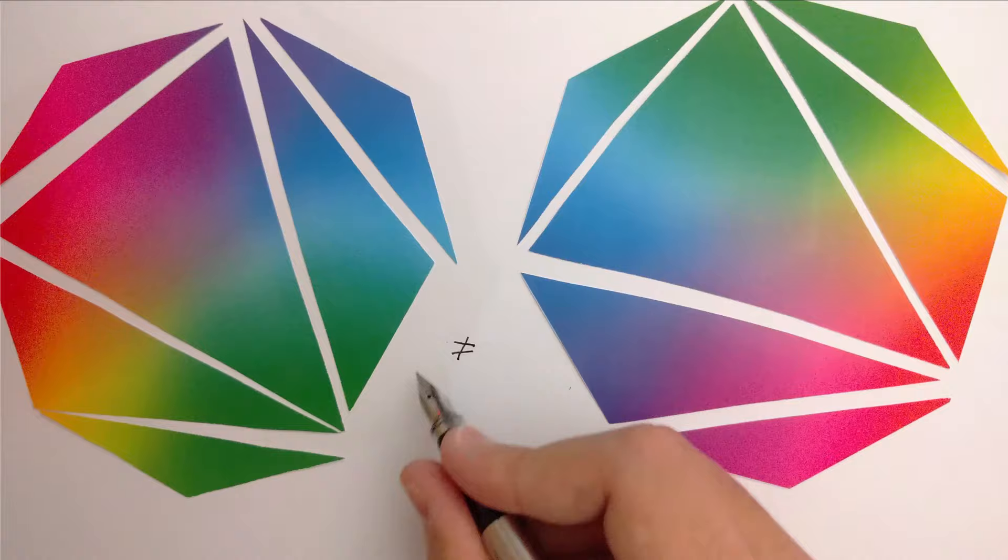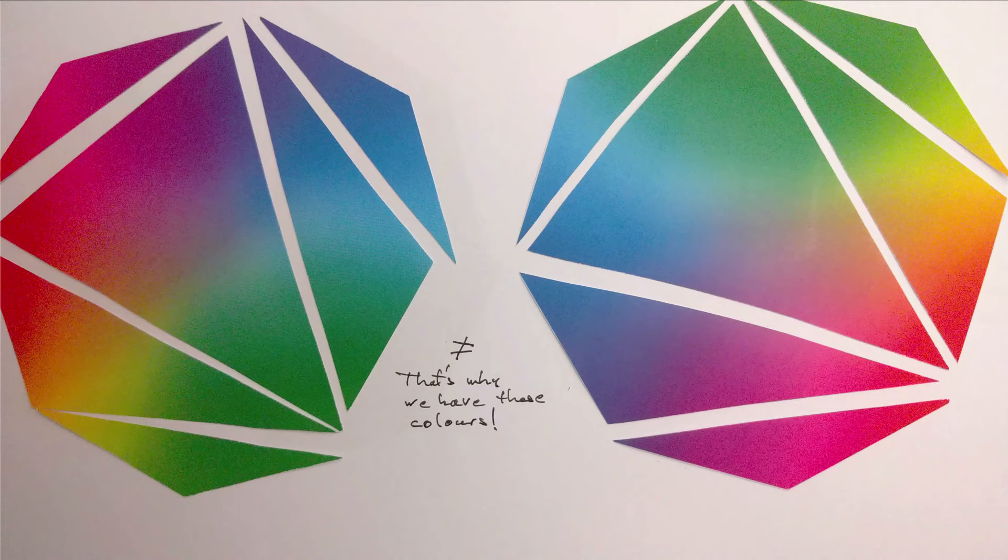You can then ask yourself how many ways there are to cut that polygon into triangles. Now an octagon is a bit too complicated. Let's start with something simple.